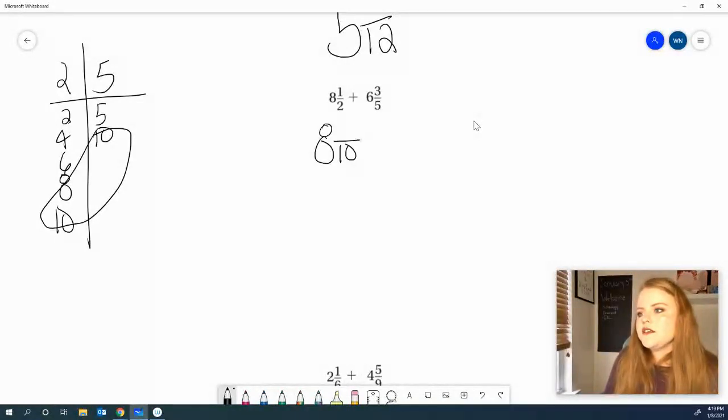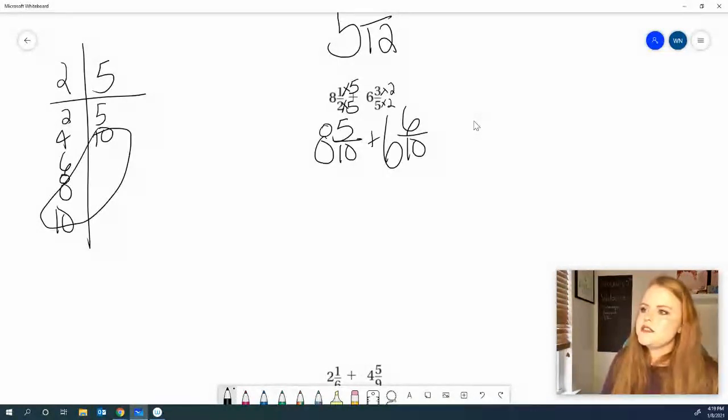So, we have 8 with 10 as our denominator. Multiply the 2 times 5 to get me to 10, so we're going to multiply that 1 times 5 as well, because whatever you multiply the denominator by, you have to multiply the numerator by. 8 and 5 tenths, plus 6 and something over 10. 5 times 2 got me 10, so 3 times 2 will get me 6.